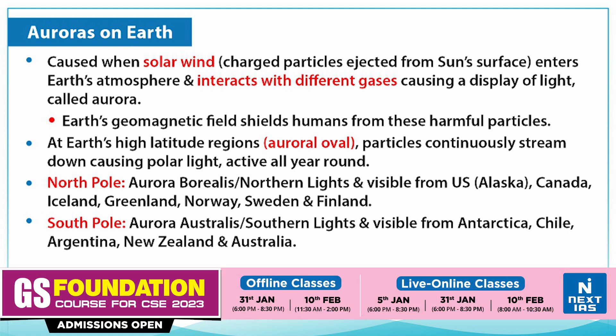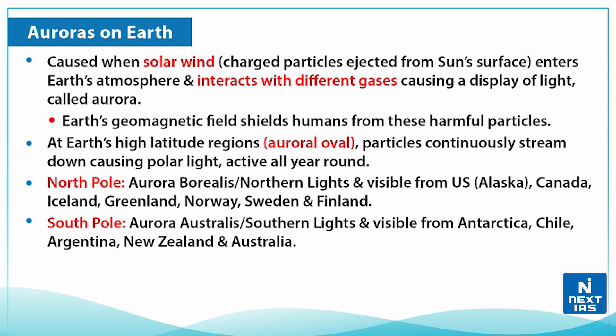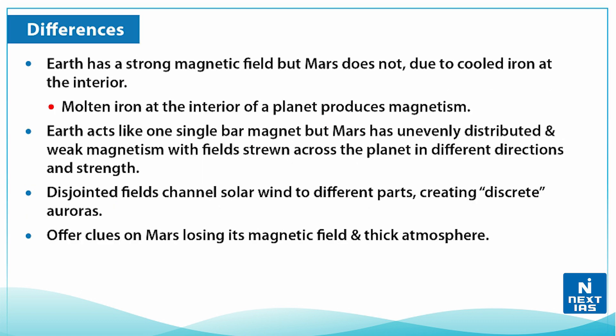The northern lights are also visible from Canada, Iceland, Greenland, Norway, Sweden, and Finland. At the south pole, this is termed the Aurora Australis, or the southern lights, and are visible from Antarctica, Chile, Argentina, New Zealand, and Australia.